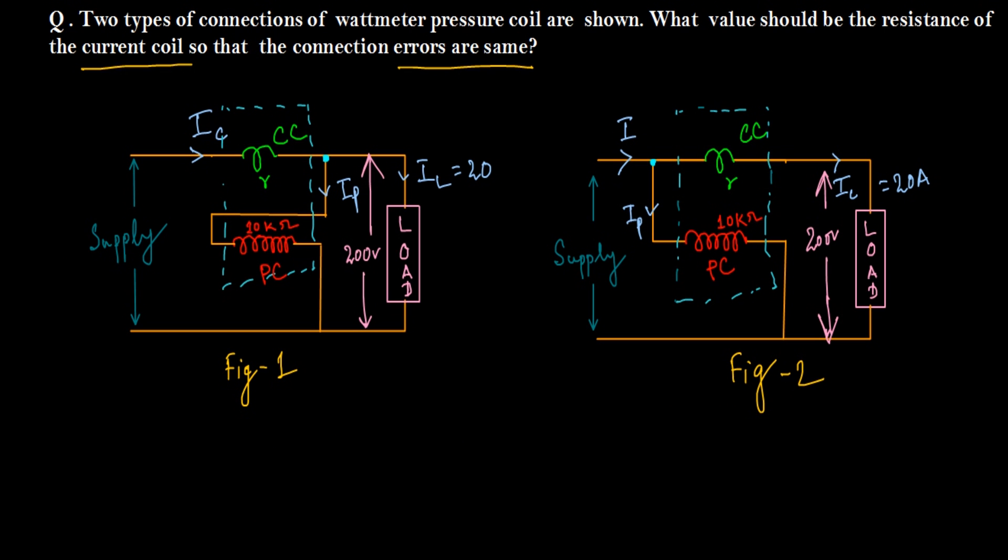Now how could we solve it? What we learned earlier is that the error due to the connection when pressure coil is at load side is V squared by pressure coil resistance. So that is equal to 200 squared by 10 kilo ohm.